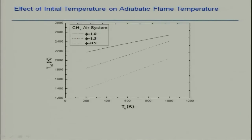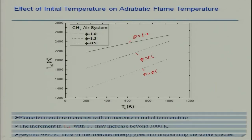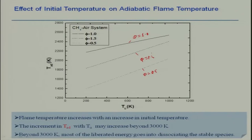Looking at the effect of initial temperature more closely: at phi equal to 1, phi equal to 0.5, and phi equal to 1.5, the adiabatic temperature goes on increasing with the initial temperature. However, if the temperature goes beyond something like 3000 K, dissociation will occur.